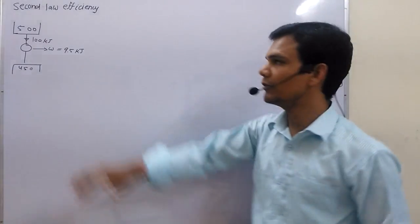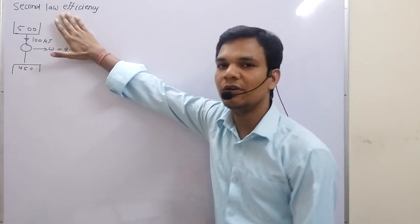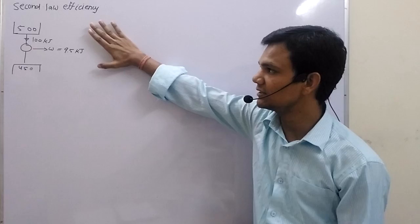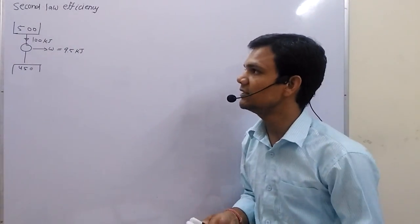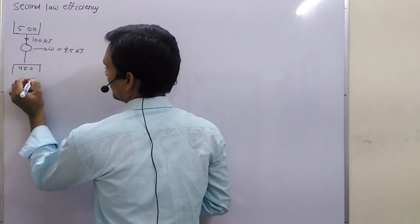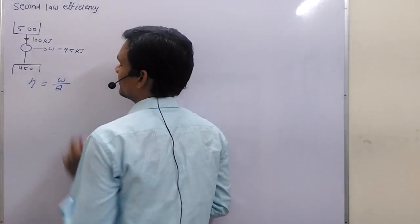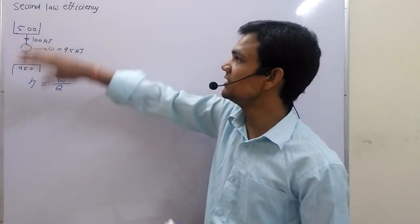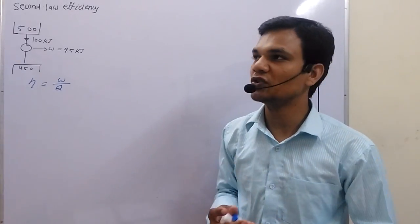We will discuss secondary efficiency. What is the requirement of secondary efficiency? If we talk about efficiency, the formula for efficiency is work output upon heat supply. Secondary efficiency is used to compare the engine's actual situation with the best possible situation.